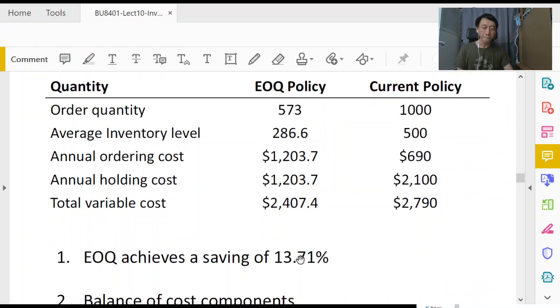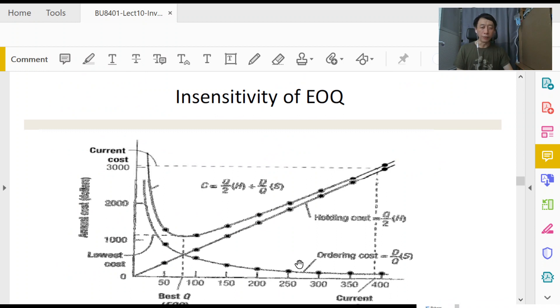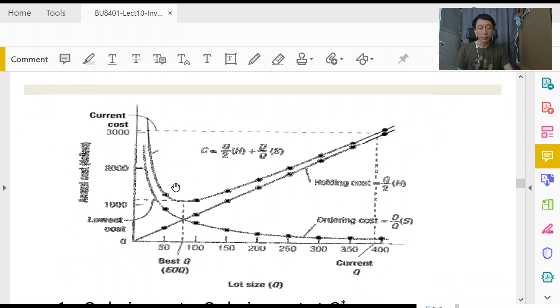The cost curve is always like this, that is we have a U-shaped curve. The linear line is the holding cost. The more we have, the more we incur because it's h times q over two. The more we buy at a time, because q is the quantity we order at a time, the more we hold. The ordering cost, on the other hand, because it is d times s divided by q, becomes a hyperbolic curve. When you add them together, you get this very distinct U-shaped curve that is always indicative of the presence of a minimum point.